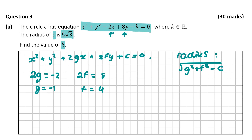Now let's fill in the radius formula and set it equal to 5 root 3, since that's the radius of our circle. We can replace c with k since they're both just constant terms. So the radius equals the square root of g squared, which is minus 1 squared, plus f squared, which is 4 squared, minus k, and that equals 5 root 3.